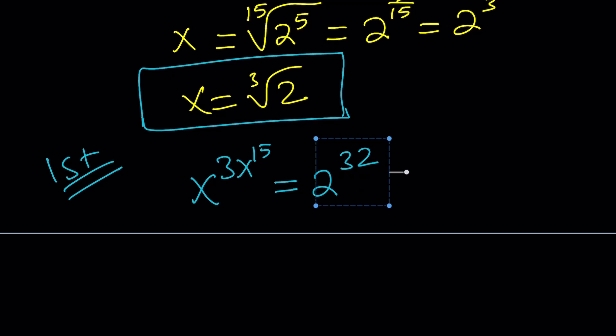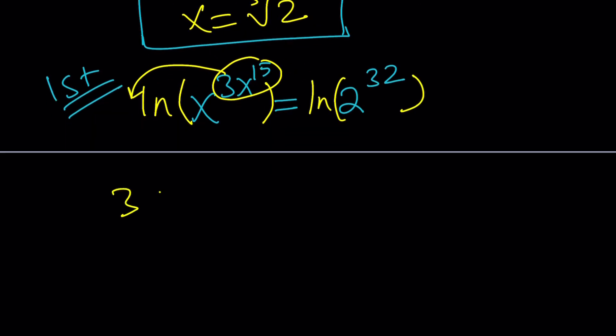Why? Because when you natural log both sides, you're going to be able to bring all the powers down, and it's going to be easier. So, let's go ahead and ln both sides, natural log. This is our exponent. We can kind of bring it to the front. That will give us 3x to the 15th multiplied by lnx equals 32 times ln2. Awesome.